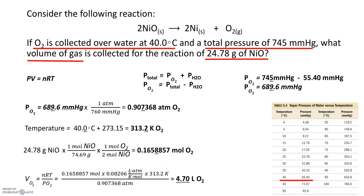The moles cancel, Kelvin cancels, and atmospheres cancel, leaving liters. Checking significant figures: moles has four sig figs, temperature has four sig figs, but pressure has three sig figs — tracing back to 745 mmHg at the ones place. So the final answer has three sig figs. The volume of oxygen gas collected is 4.70 liters — including the trailing zero to show three sig figs.